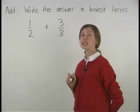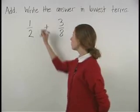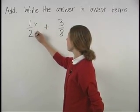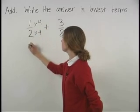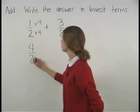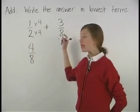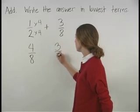To get an eight in the denominator of one-half, we multiply the numerator and the denominator by four, which gives us four-eighths. Notice that three-eighths already has an eight in the denominator.